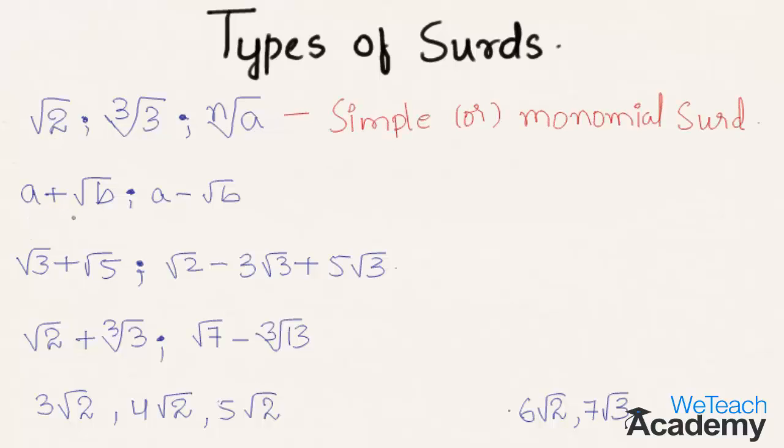Coming to the second example, where a is a rational number and root b is a surd, then these terms are called mixed surds.